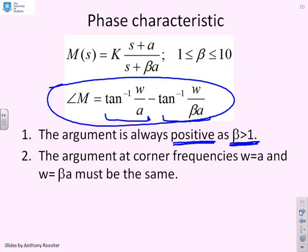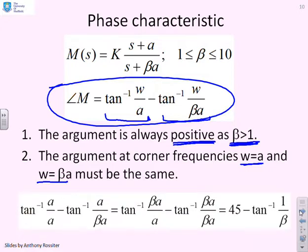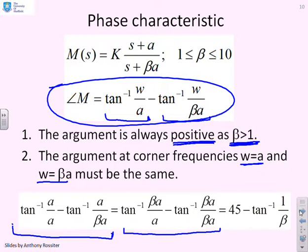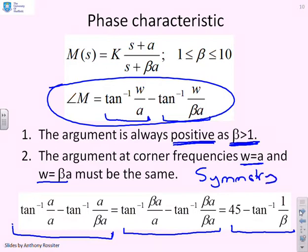The argument at the corner frequencies — omega equals A and omega equals beta A — must be the same. You can prove this by substituting the corner frequencies in. At omega equals A, the phase is tan⁻¹(A/A) minus tan⁻¹(A/βA), and at omega equals βA, it's tan⁻¹(βA/A) minus tan⁻¹(βA/βA). With a little algebra, both give 45 minus tan to the minus 1 of 1 over beta. So they are the same, and as with the lag compensator, there's a symmetry that helps with sketching.